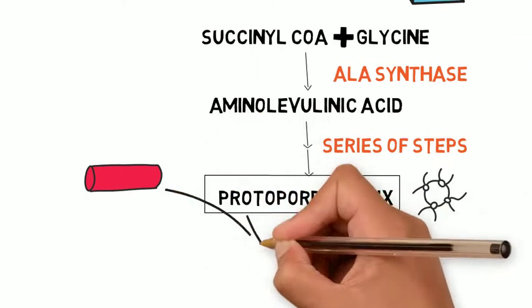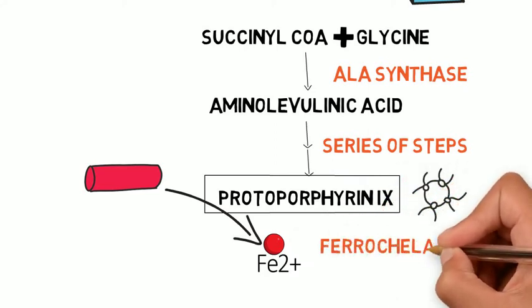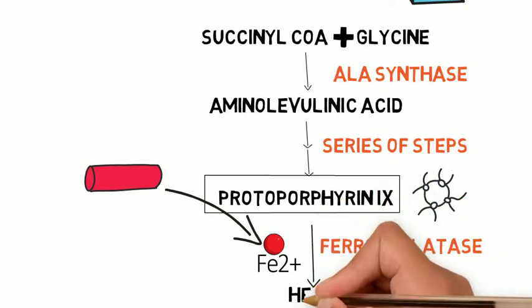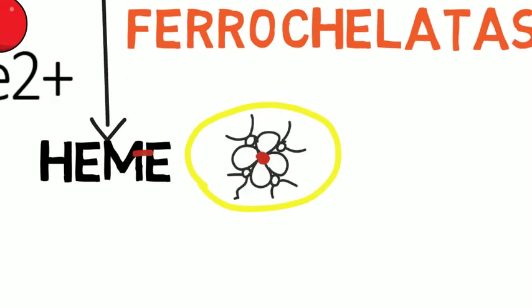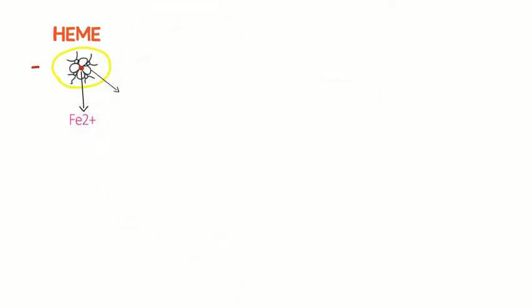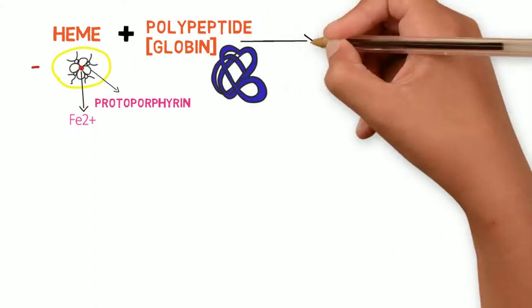Iron transported in the blood is delivered to the bone marrow, where it combines with protoporphyrin via ferrochelatase to form heme — iron incorporated into protoporphyrin. This heme then combines with a polypeptide called globin to form one hemoglobin chain.